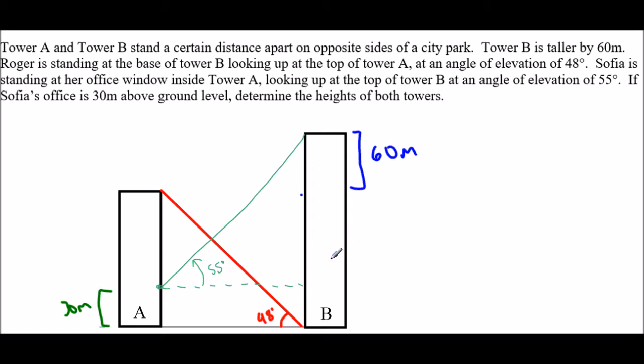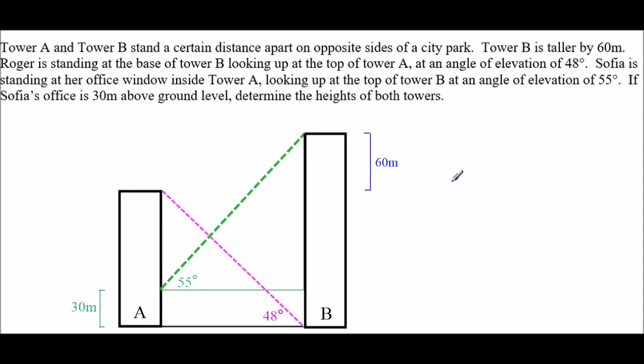Now obviously there's some right angle triangles happening here. So the angle of elevation triangle for Roger, there's a right angle triangle there. For Sophia, there's also a right angle triangle here if we include this line as the base. But that's kind of all the information I actually know except for there's a 30 meter thing here. So we need to start to figure out some variables that we can use so that we can start setting up some equations and solving. So let me just get a slightly nicer picture.